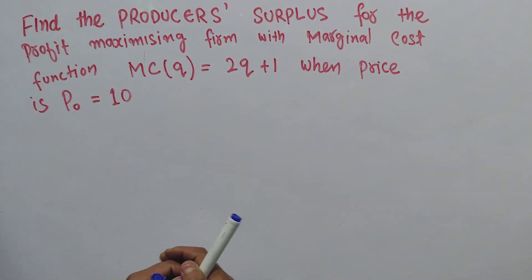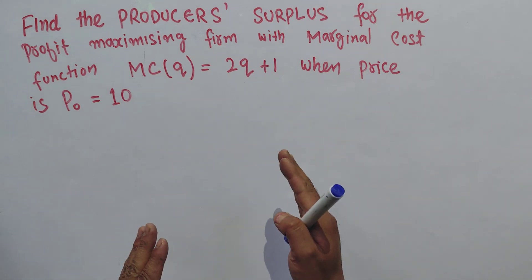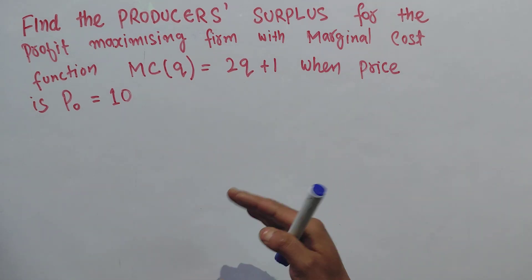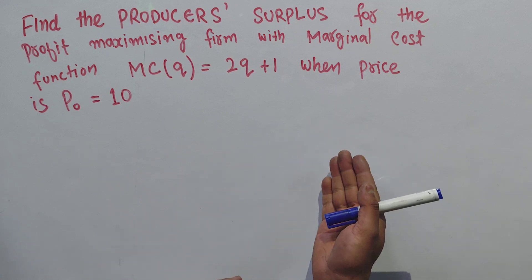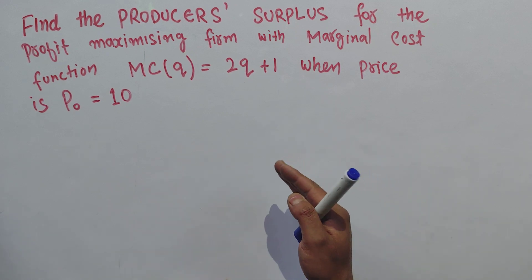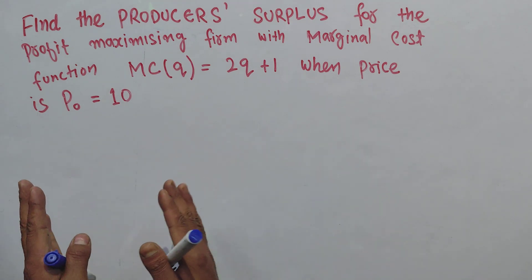By producer surplus, what we mean is simply the difference between how much a person would be willing to accept for a given quantity of a good versus how much they receive by selling the good at the market price.